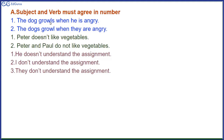The dog growls when he is angry. The dogs growl when they are angry. Another example: Peter doesn't like vegetables — 'does' is a singular verb because Peter is singular. But when the subject increases to Peter and Paul, the verb becomes 'do not like vegetables.' Peter and Paul do not like vegetables. Only the number of the verb is changed according to the number of the subject.